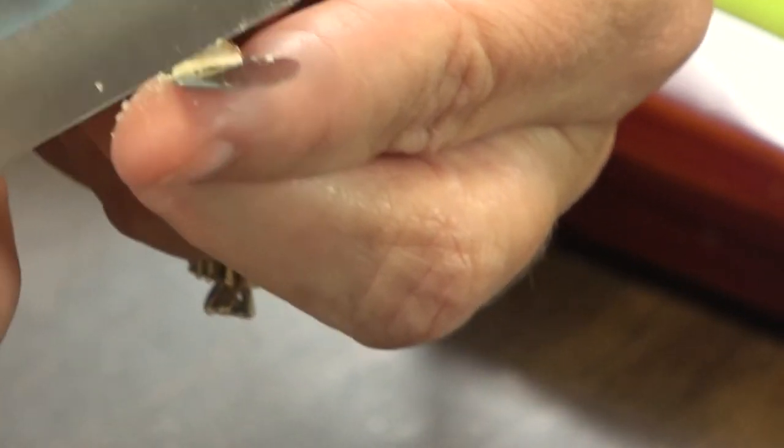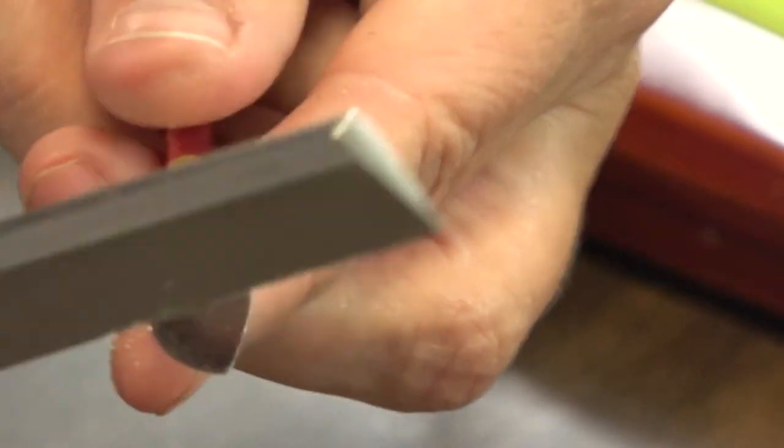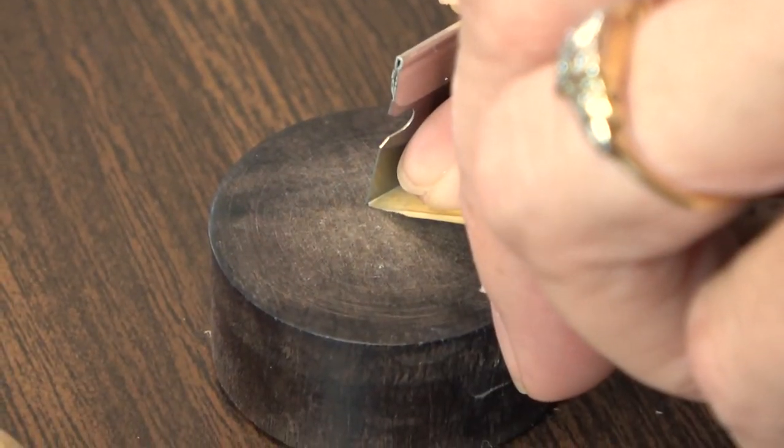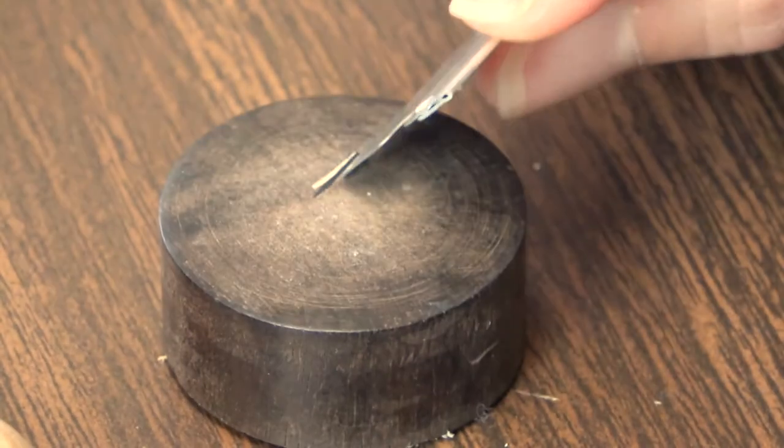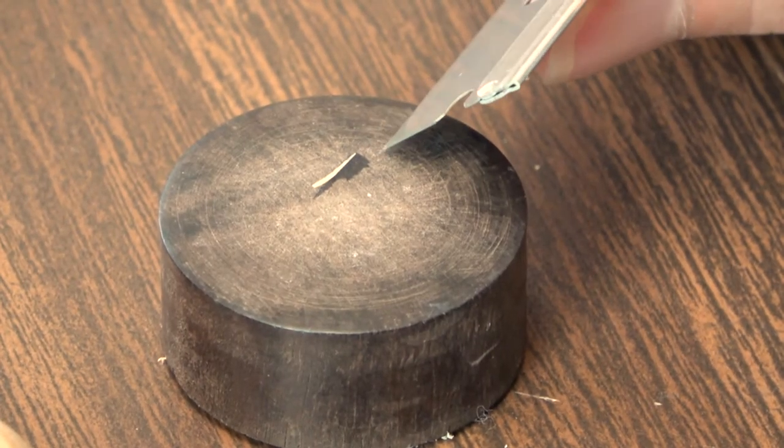Likewise, if the pitch is lower than C, you will most likely need to clip the reed. Clipping the reed will make the reed more resistant and harder to play on. Always clip just a little bit at a time, one millimeter or less.